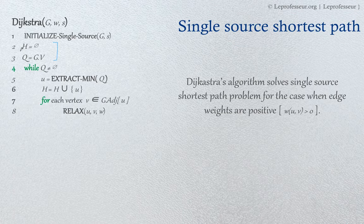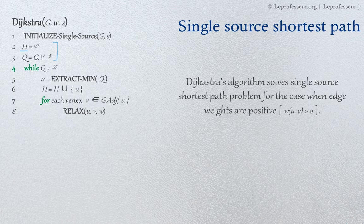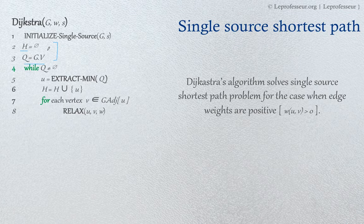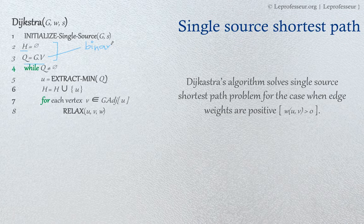We maintain a set S which tells us that we have computed the paths from the vertices which are in set S, and we maintain a Q — a min priority queue — for all the vertices in the graph. As we discussed in previous lectures, how to implement the priority queue: we can implement it simply as a binary heap which follows the min-heap property.